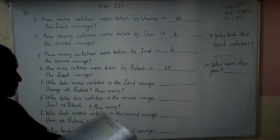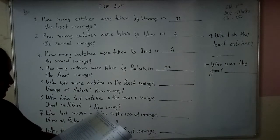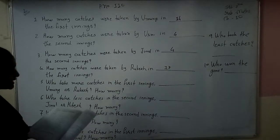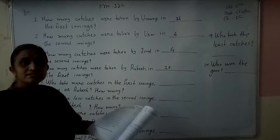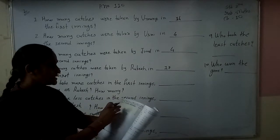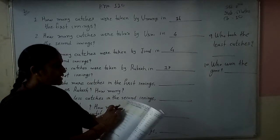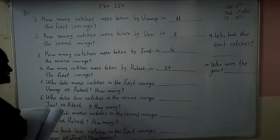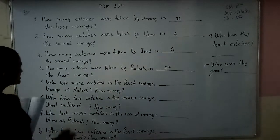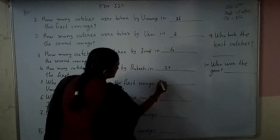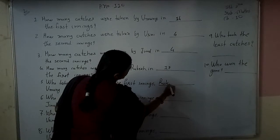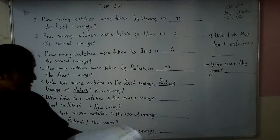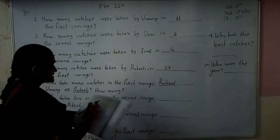Fifth question: Who took more catches in the first inning — Umang or Rakesh? Umang's catches are 14 and Rakesh's catches are 17. Comparing 14 and 17, Rakesh took more catches. So the answer is Rakesh.